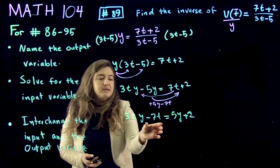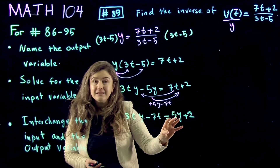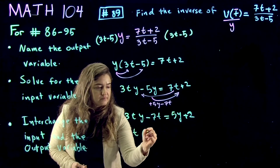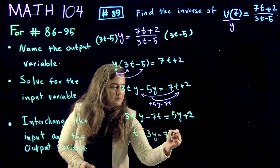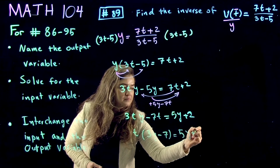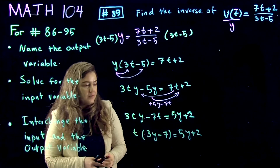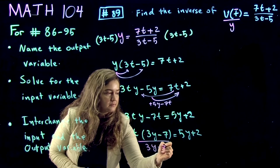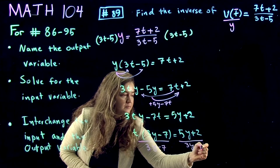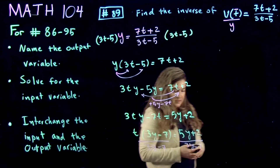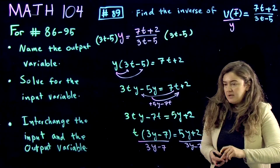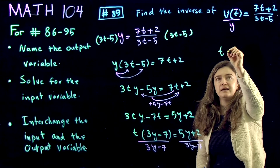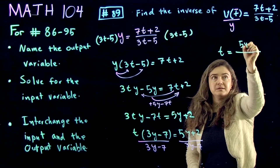Now that we've isolated the t terms, the next step is to factor t out. The last step in solving for t is dividing both sides by the factored coefficient. We end up with t equal to the resulting expression after simplification.